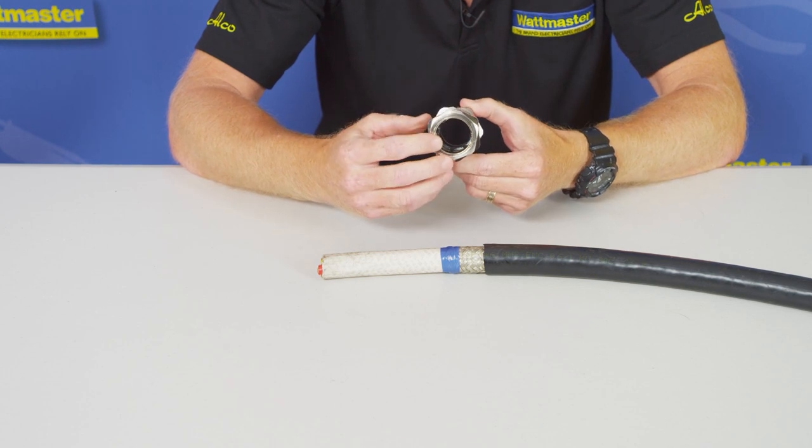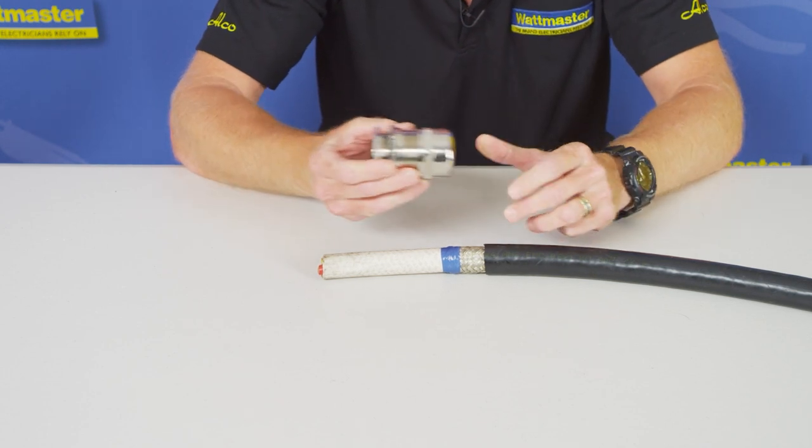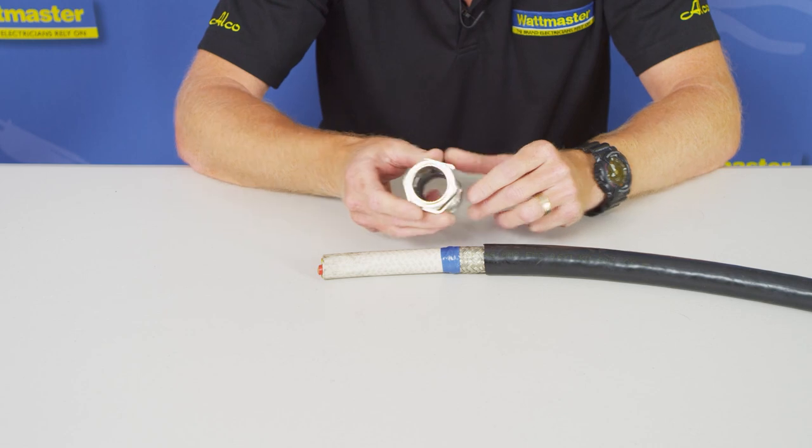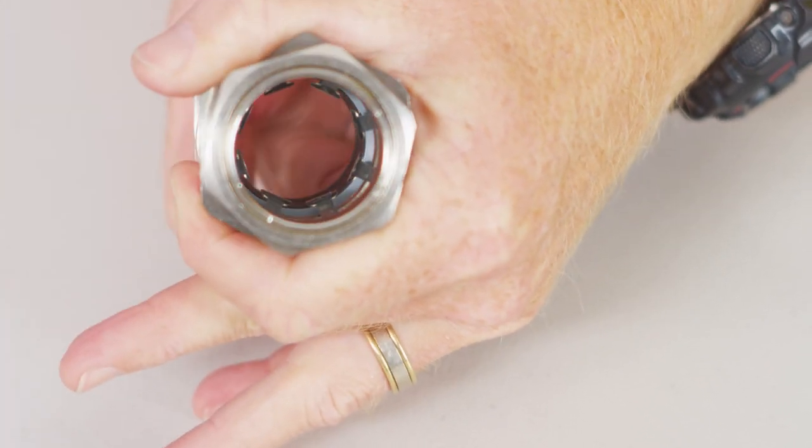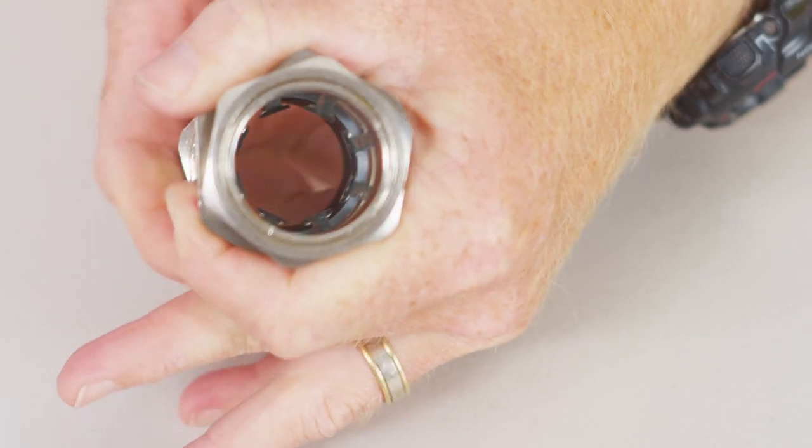This is one of the easiest glands to use. Previously we've had sharp fingers inside the gland and you couldn't move the gland once you've applied it. What we've done now, we've got a knuckle type of situation so it's a nice smooth finish and it gives a broader span across the braid.